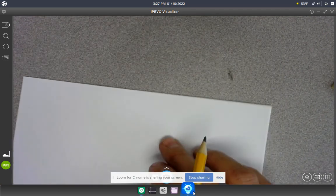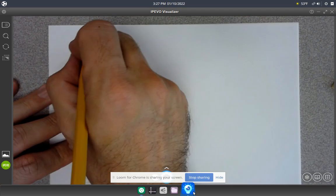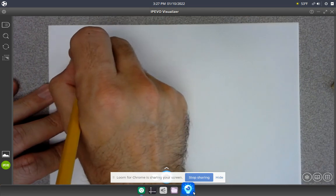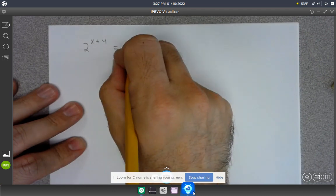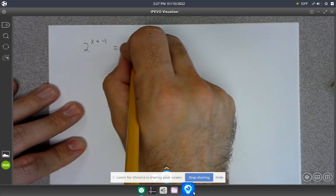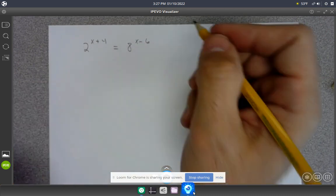Alright, do another one here. Let's say I've got 2 to the x plus 4 is equal to 8 to the x minus 6.